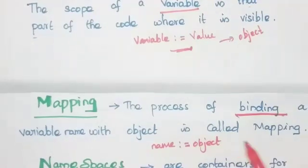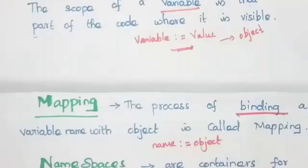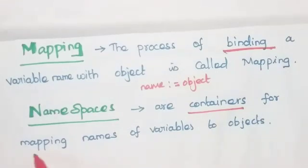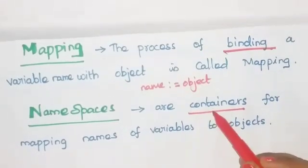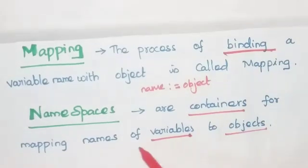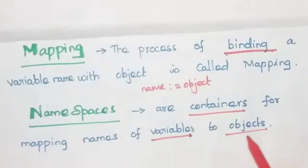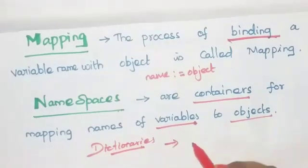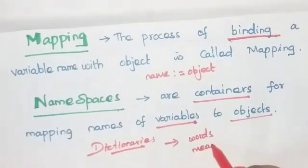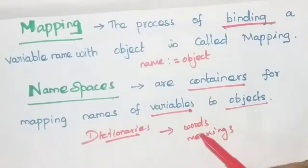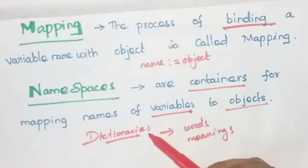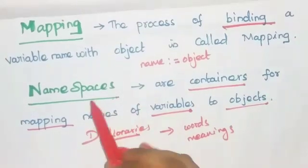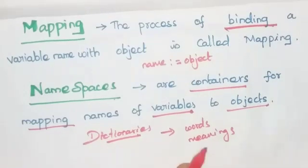Programming languages keep track of all this mapping with namespaces. So what are namespaces? Namespaces are containers for mapping names of variables to objects. You can compare namespaces with dictionaries, because dictionaries contain a list of words and their meanings. The words are mapped with their meanings in dictionaries. Similarly, the variables are mapped with their objects — that is called namespaces.